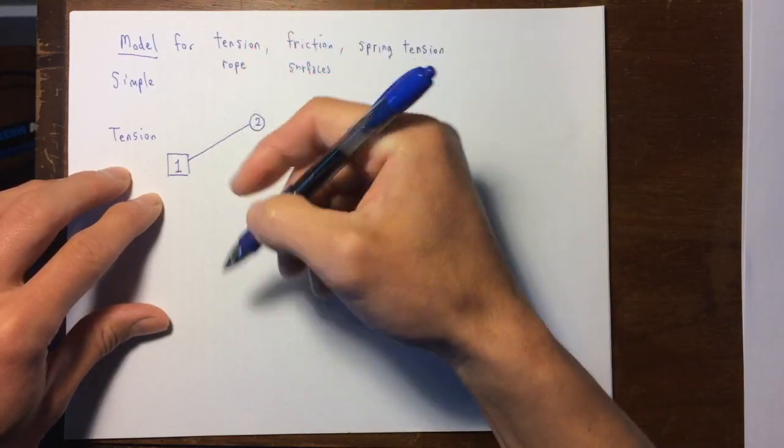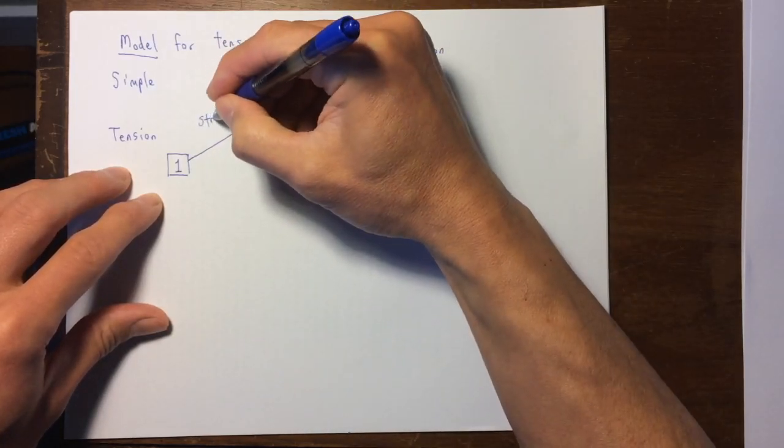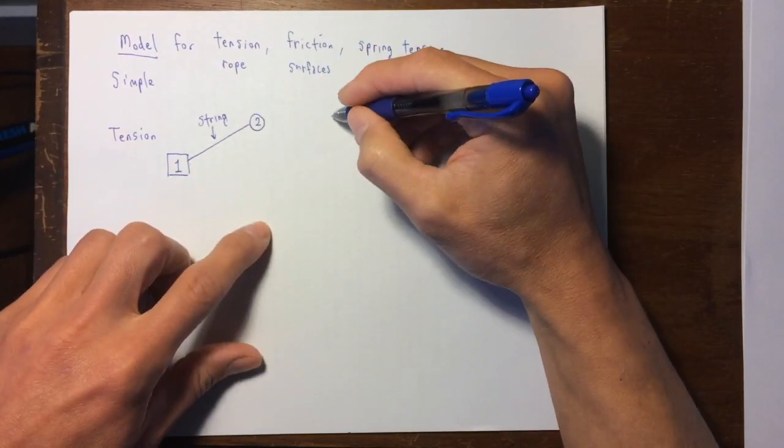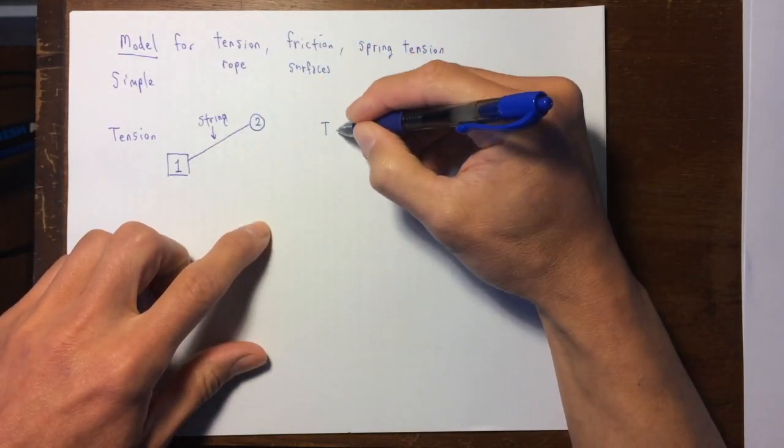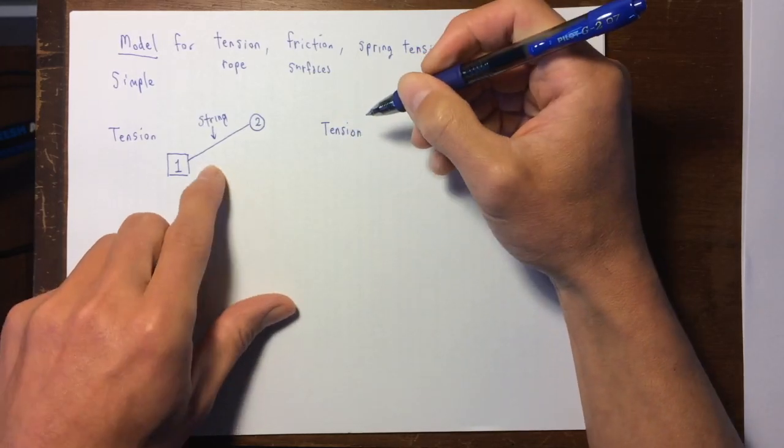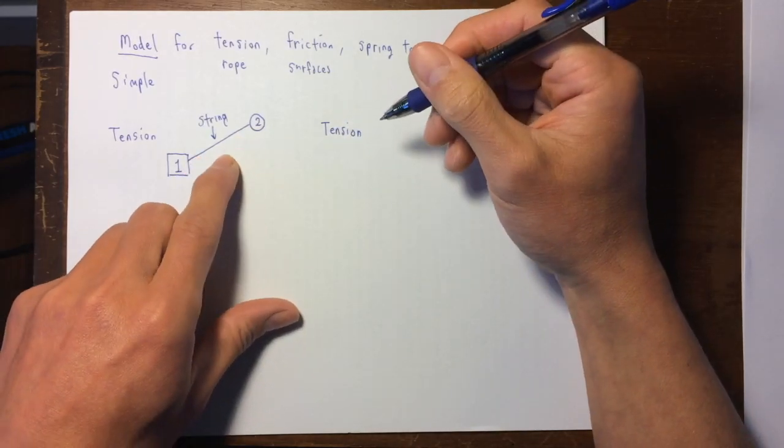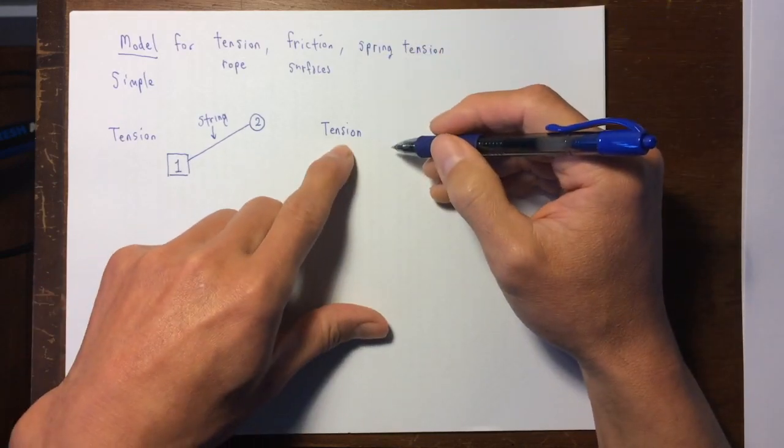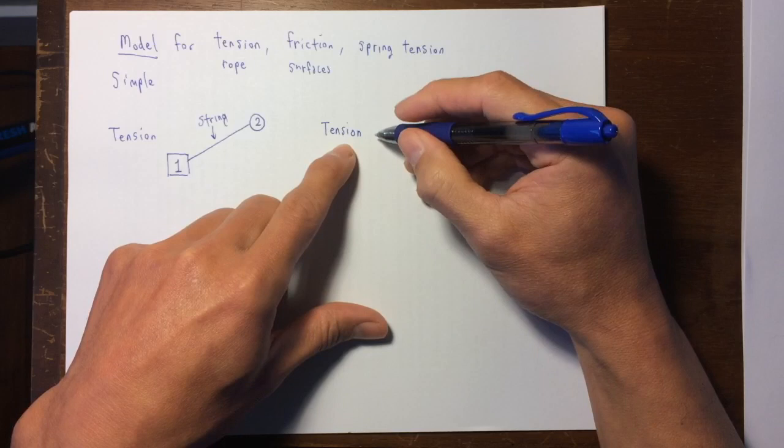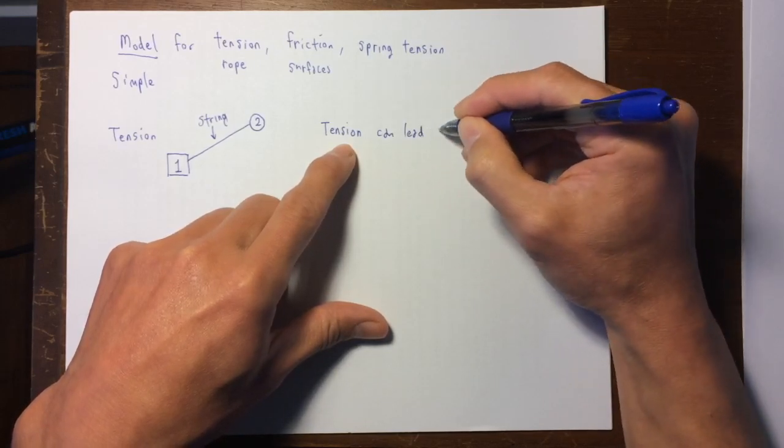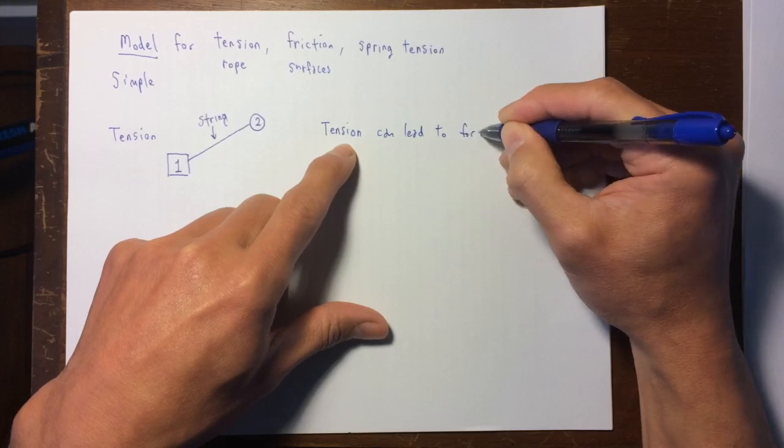So this thing right here is the string and the thing about this string is that it can be under tension. That is, it can be sort of taught like on a guitar. So this tension can lead to forces.